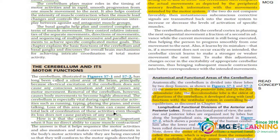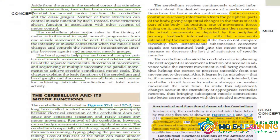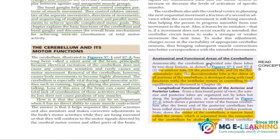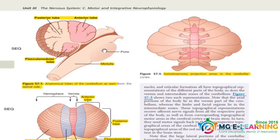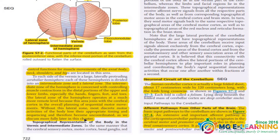This paragraph is just for your reading; you don't have to memorize anything. The next section is important for your MCQ point of view and also for your understanding. Next is the anatomical and functional areas of the cerebellum — read this text for your concepts and do the diagrams. This is also important as a SEQ, and this diagram is also very very important.